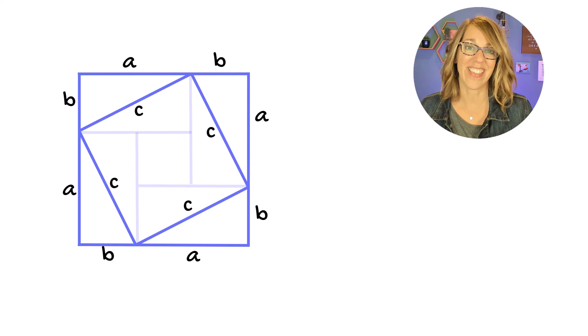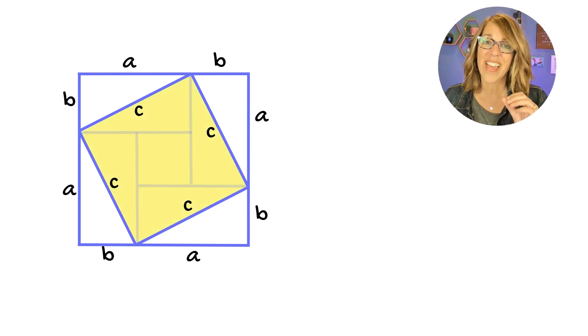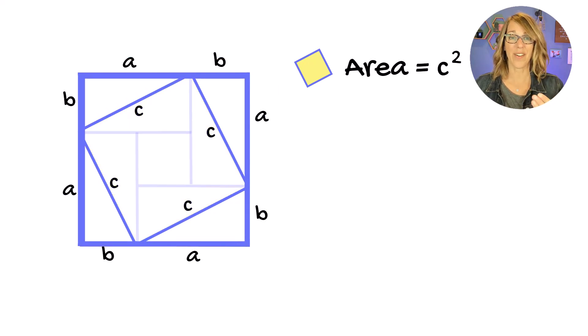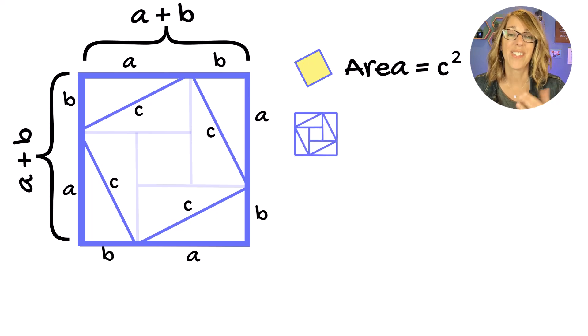This gives us a chance to look at the areas. The area of that tilted square is C squared, but the area of the outer square, this square has sides of A plus B, so its area is A plus B quantity squared.